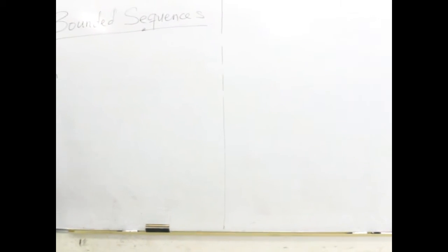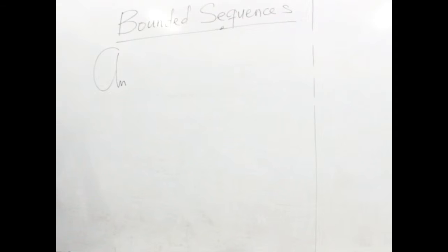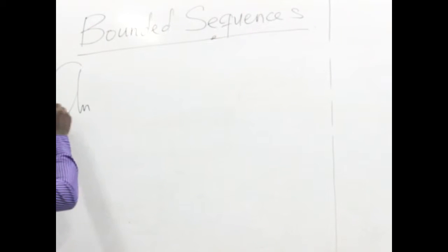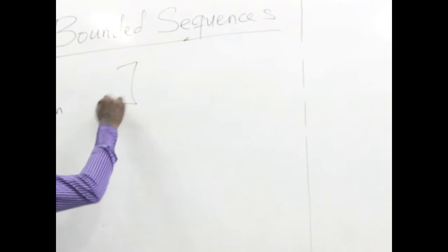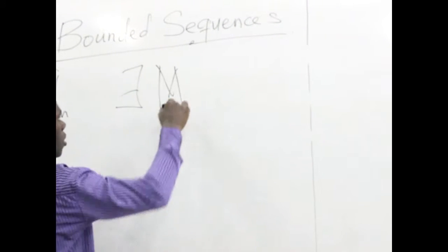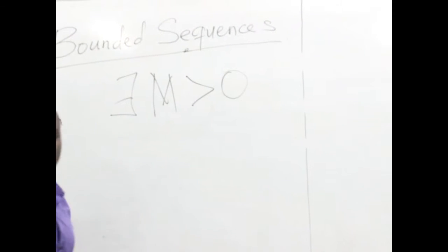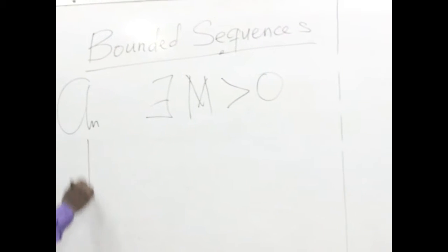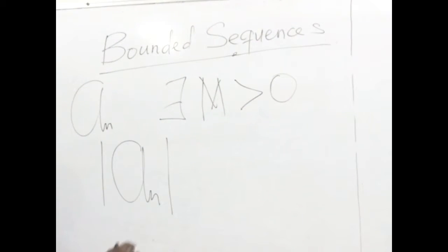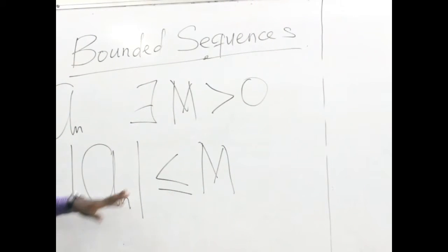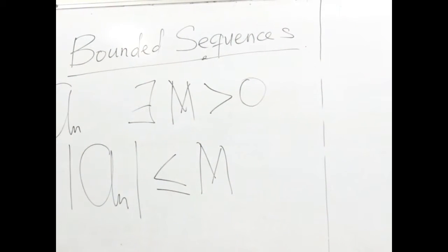But mathematically when we say bounded sequences, let's take this sequence for instance. For us to say that this is a bounded sequence, it means that there exists a certain real number n which is greater than zero — so it's a non-negative number — such that the absolute value of this sequence is less than or equal to this particular n. When we have a condition like this, then we see that this particular sequence is a bounded sequence.